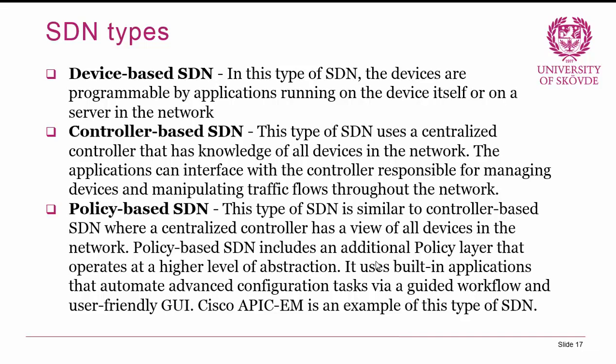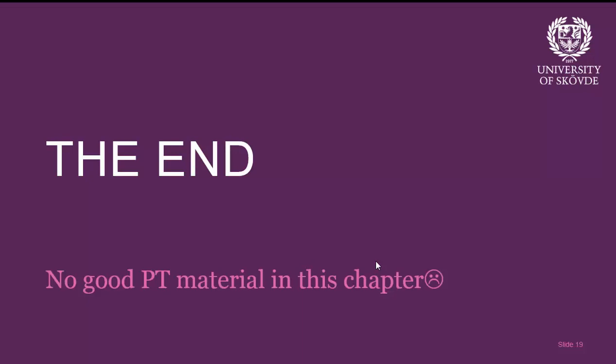We also have policy-based SDN, which is similar to controller-based SDN but includes an additional policy layer operating at a higher level of abstraction. It uses built-in applications that can automate advanced configuration tasks with guided workflows and a user-friendly graphical interface. Cisco APIC-EM is an example of this type of SDN, but I won't spend too much time on Cisco-specific technologies. That concludes this lesson — there is no Packet Tracer material for this chapter. Next time, we will summarize the course with some troubleshooting and a context-based troubleshooting exercise. See you for the final lesson, lesson number eight — have a good day!